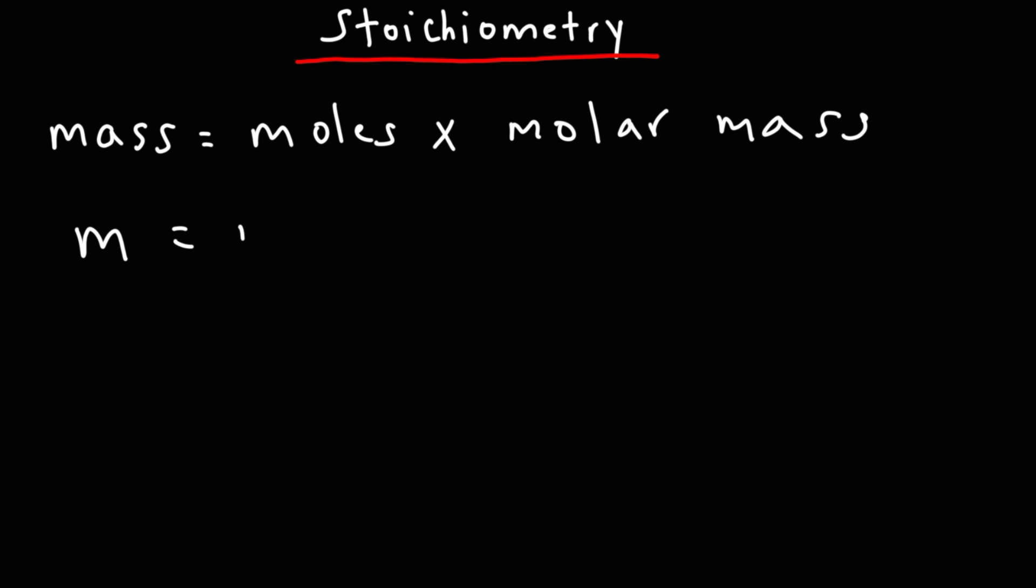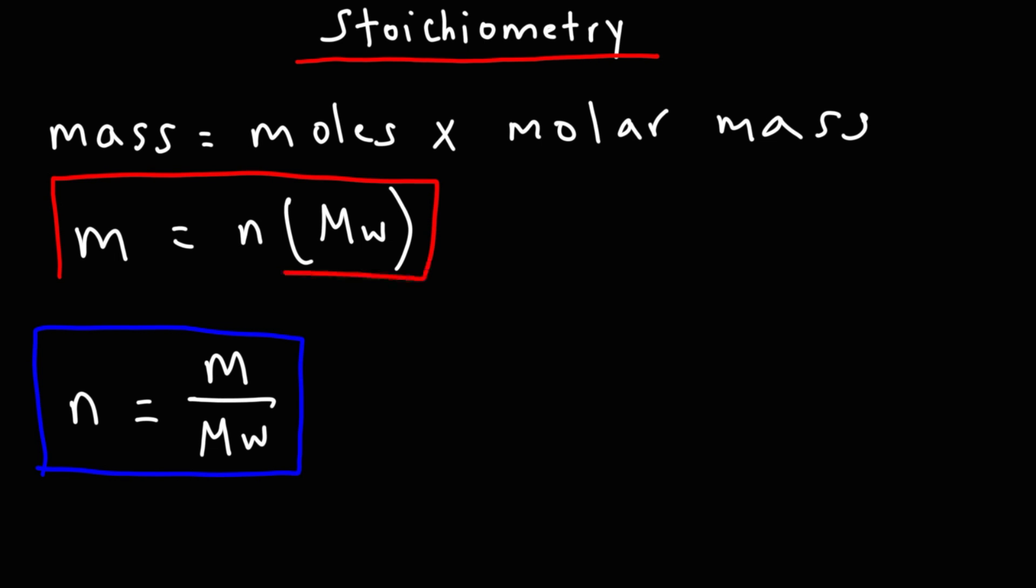So m is the mass, n is the number of moles, and the molar mass I like to use Mw so you don't confuse that with molarity, which is usually capital M. I like to use Mw for molecular weight. Now if you need to calculate the moles, the moles is equal to the mass divided by the molar mass or the molecular weight. So those are two formulas that you may want to be familiar with if you're studying stoichiometry.